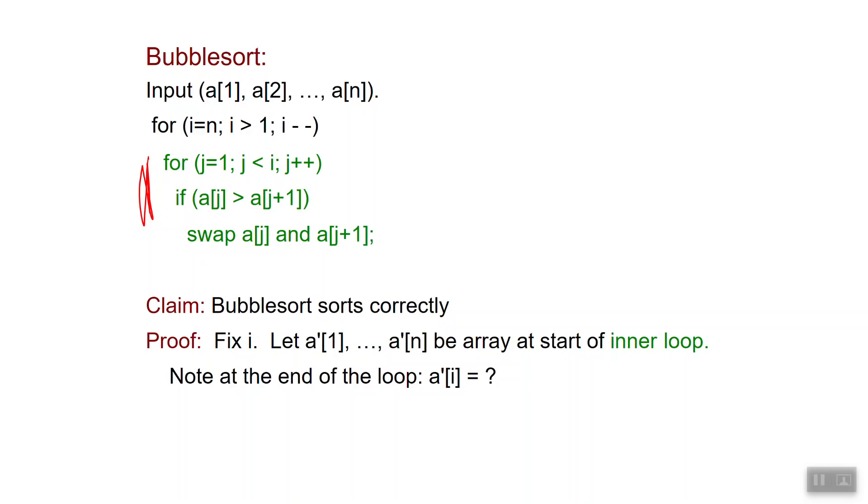Okay, so at the end of the loop, what would be the content of a prime i? Well, if we think about these swaps, we realize that this entry a prime i will at the end contain the maximum of that array. It would be the maximum of the subarray from 1 to i, so it's the maximum over k less than i of a prime of k.